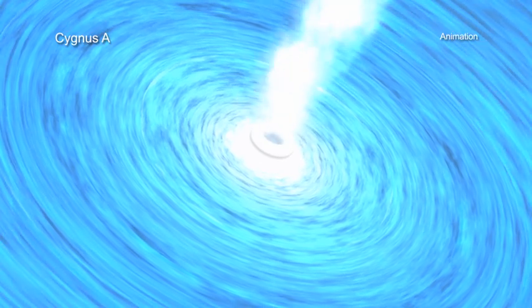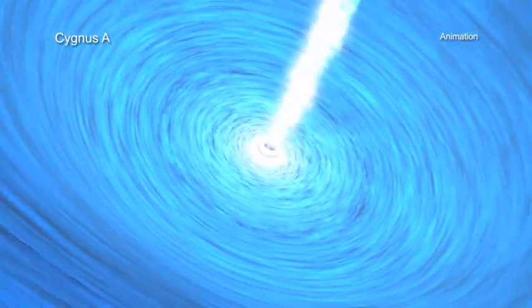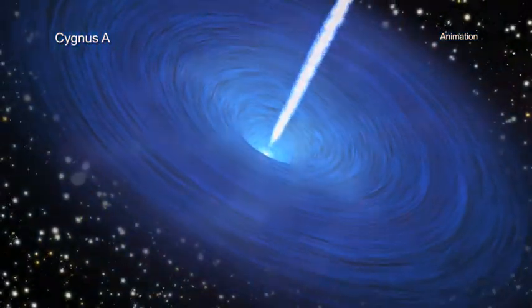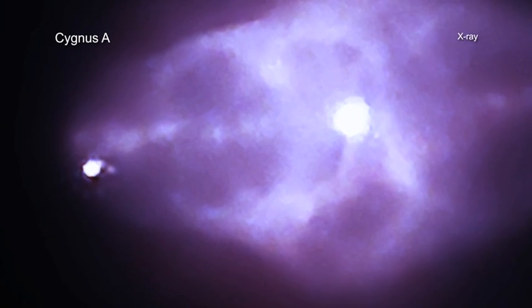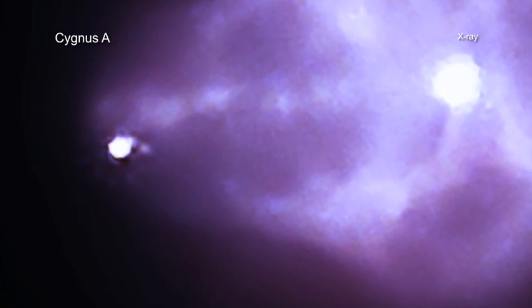Chandra's data reveal the presence of a powerful jet of particles and electromagnetic energy that is shot out from the black hole and slammed into a wall of hot gas, then ricocheted to punch a hole in a cloud of energetic particles before it collides with another part of the gas wall.